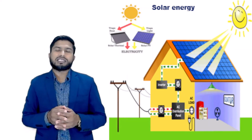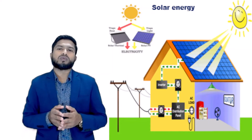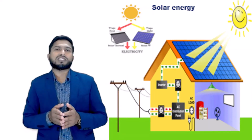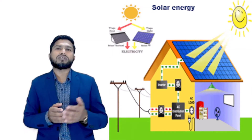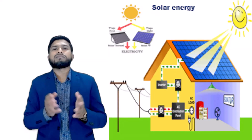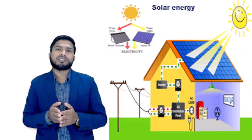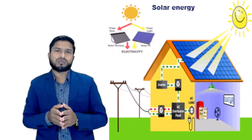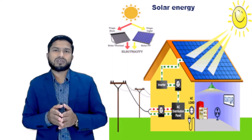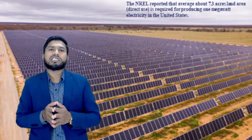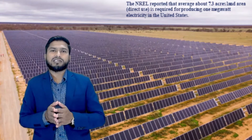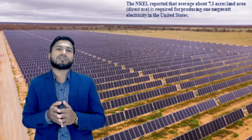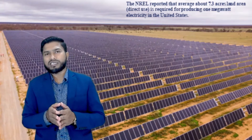The demand and use of solar energy have been increasing around the world using two popular methods: photovoltaic (PV) and concentrated solar power (CSP). Total capacity of solar powered electricity reached 227 GW in 2015, representing above 1% share of renewable electricity production. PV farms and CSP are large-scale centralized methods of solar energy production. The National Renewable Energy Laboratory (NREL) of the United States reported that the average required land area for direct use is about 7.3 acres per megawatt of electricity produced.